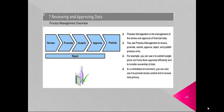Process management is the management of the review and approval of Financial Management data. You use process management to review, promote, submit, approve, reject and publish process units. For example, you can use it to submit budget plans and have them approved efficiently, and to transfer ownership of data. In a centralized environment, you can also use it to provide review control and to ensure data privacy.